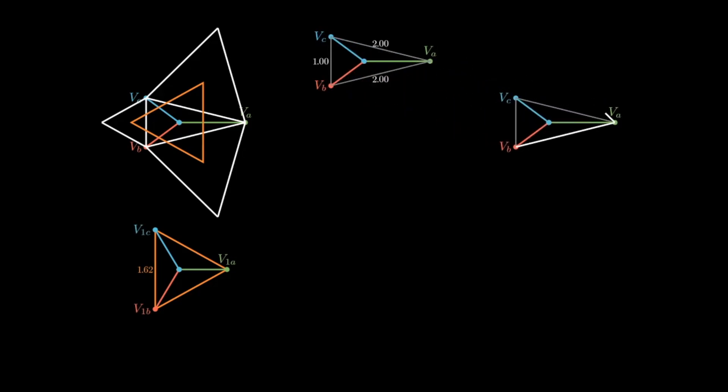To find V2, start with the original triangle again. Erect internal equilateral triangles off the sides, and then connect the center of these three new triangles. This gives the construction of the inner Napoleon triangle. Rotating the inner Napoleon triangle 180 degrees recovers the V2 phasors.